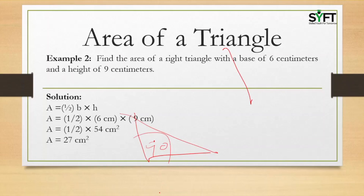Using half base into height: that is half into 6 into 9, equal to half into 54 centimeters squared, which equals 27 centimeters squared.